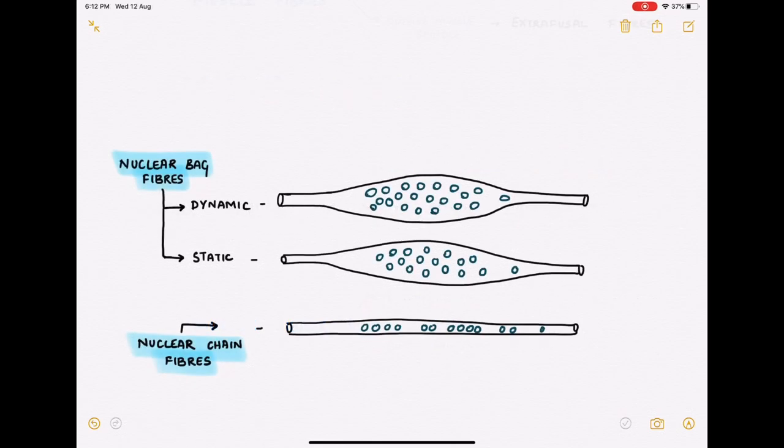We have two types of intrafusal fibers. One, we have the nuclear bag fibers which have a dilated center containing a bunch of nuclei. This can be subdivided into dynamic and static fibers. Secondly, we have nuclear chain fibers in which the nuclei are arranged in a chain.